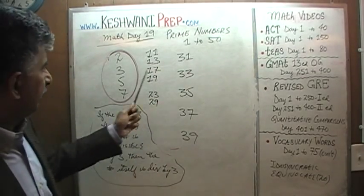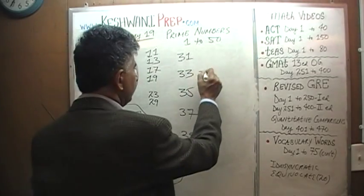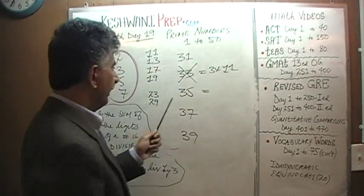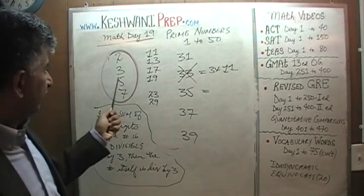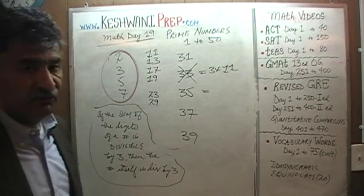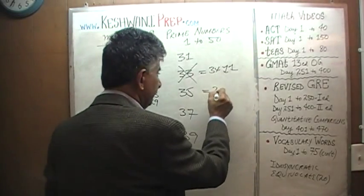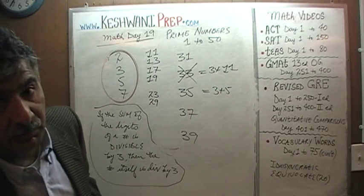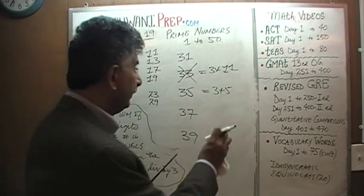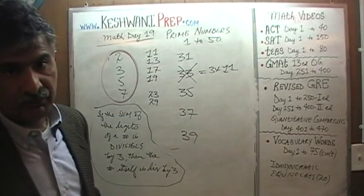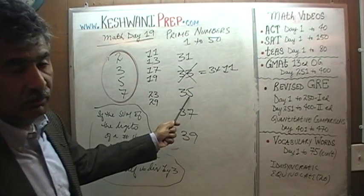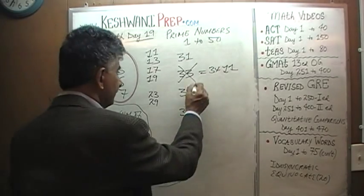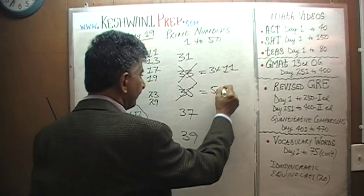33 can be divided by 3 — yes, 33 is simply 3 times 11, so it is not a prime number. Can we divide 35 by 3? 3 plus 5 is 8, and 8 is not divisible by 3, so 35 is not divisible by 3. Can we divide it by 5? Yes — if a number ends in a 5 or a 0, it is divisible by 5. 35 is not a prime number; it is simply 5 times 7.